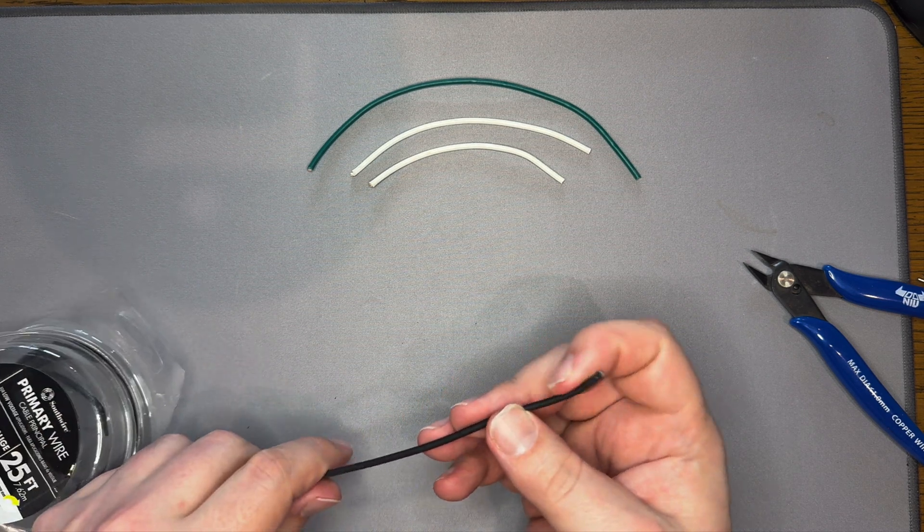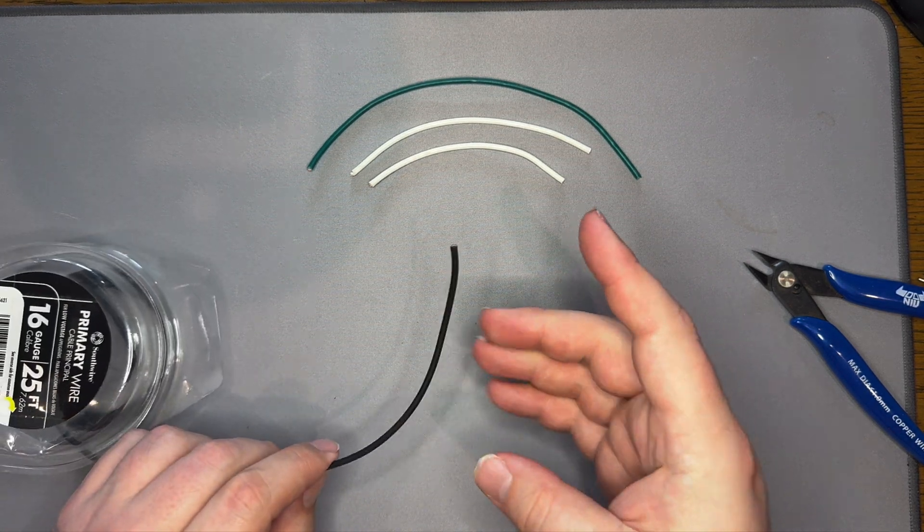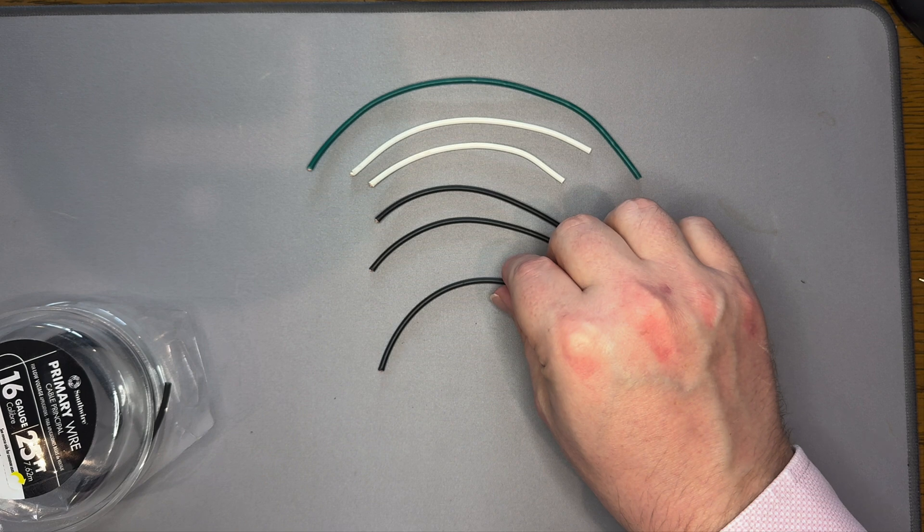Next, we will cut the hot wires, which are typically black. We will need three of these, all also 4 to 5 inches long.